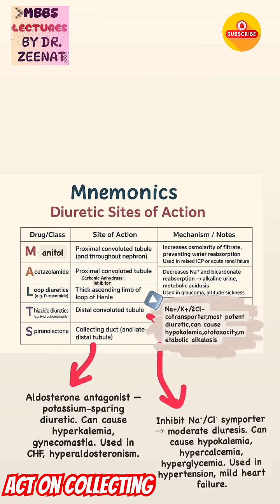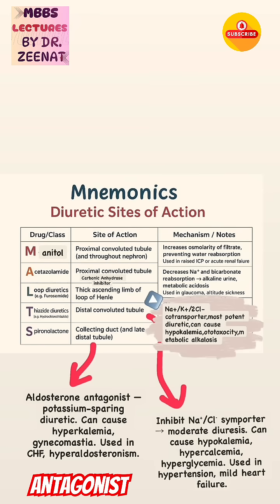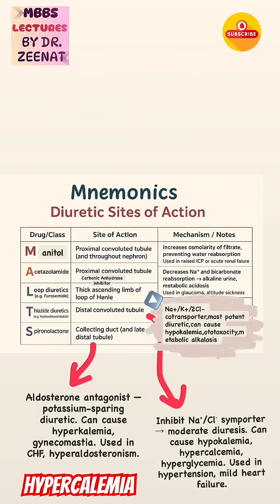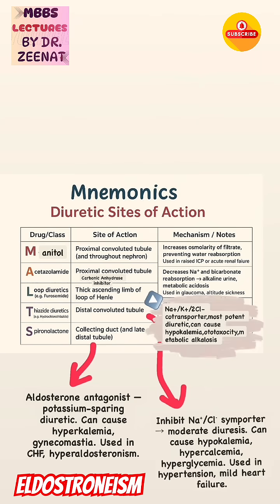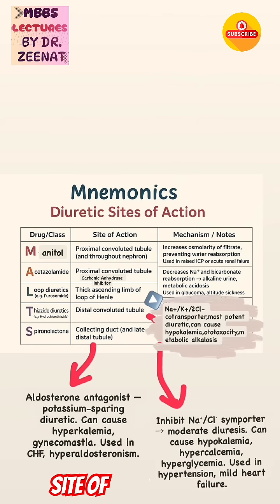Spironolactone acts on the collecting ducts and late distal tubule. It is an aldosterone antagonist and a potassium-sparing diuretic, thus can cause hyperkalemia and gynecomastia. It is used in chronic heart failure and hyperaldosteronism. This covers the mnemonics for diuretic sites of action.